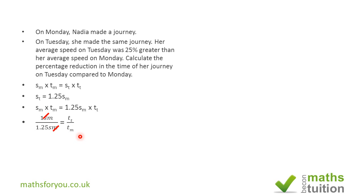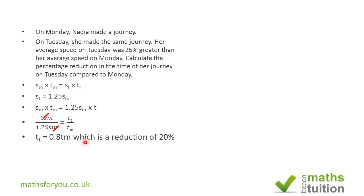This means T_T equals 0.8 × T_M, because 1 divided by 1.25 equals 0.8. So Tuesday's time is 80% of Monday's time, which means there is a 20% reduction. We can verify: 1 minus 1 over 1.25 equals 0.20, multiply by 100 and you get 20%. You can stop there if you wish.